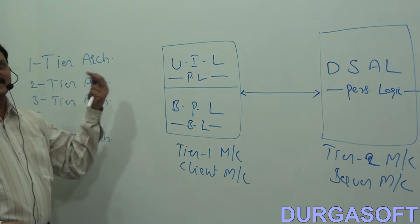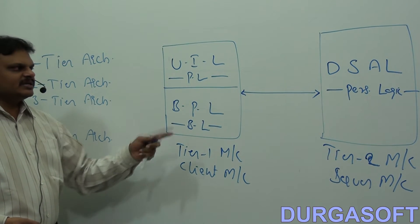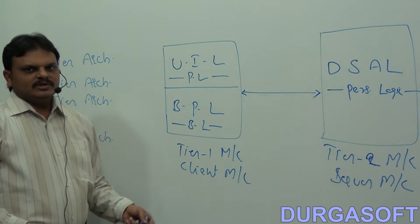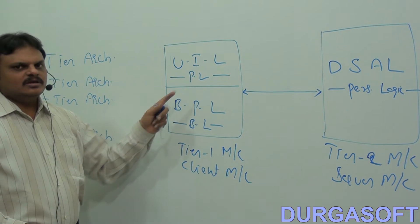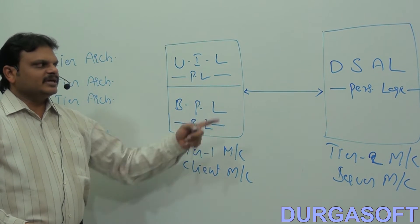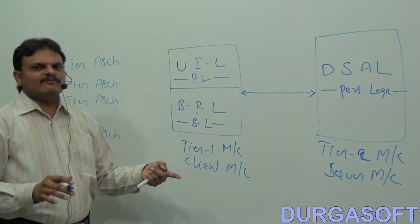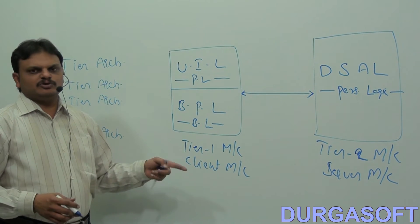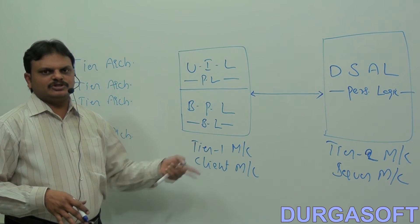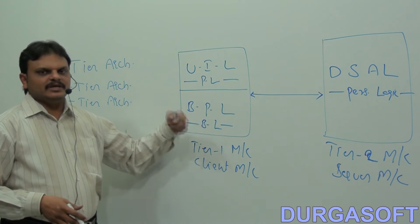When compared with one-tier architecture, two-tier architecture is somewhat better because the data storage and access layer is separated. The user interface layer and business processing layer are both at tier one, and the data storage and access layer is available at tier two. That means burden will be reduced to the machine, and automatically the performance of the application will be increased.